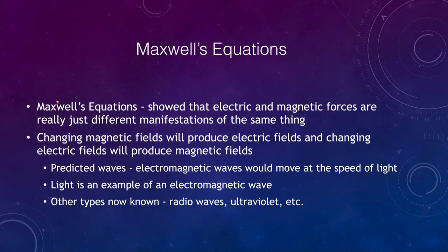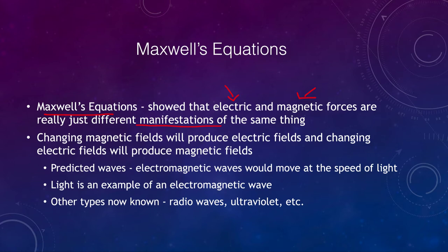Electromagnetic waves are defined from Maxwell's equations. What Maxwell's equations really show us is that electric and magnetic forces are just different manifestations of the same thing. This is one of the first unified theories of some of the basic forces of nature. We're still looking for ones that incorporate all of the forces of nature including gravity, which so far has been elusive. However, electric and magnetic forces are really the same — just different ways of manifesting themselves.